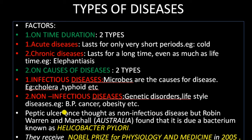Peptic ulcer is a disease which occurs in the stomach and duodenum — that is, inflammation of the stomach and duodenum, known as acidity. Robin Warren and Barry Marshall, two scientists from Australia, found that peptic ulcers are not non-infectious diseases but are caused by a bacterium known as Helicobacter pylori.